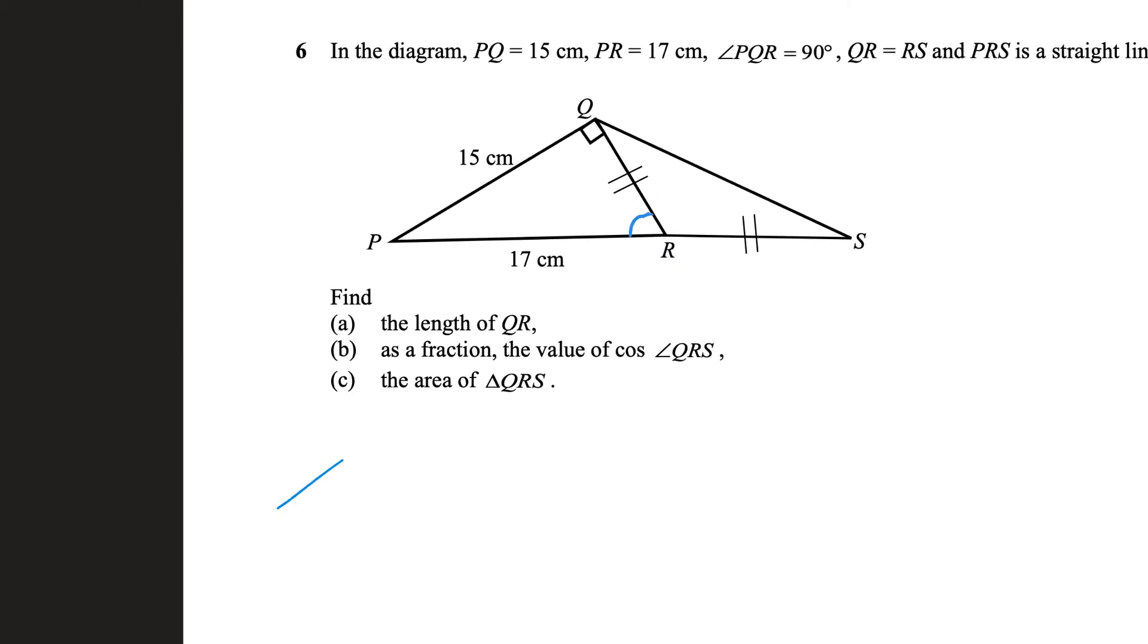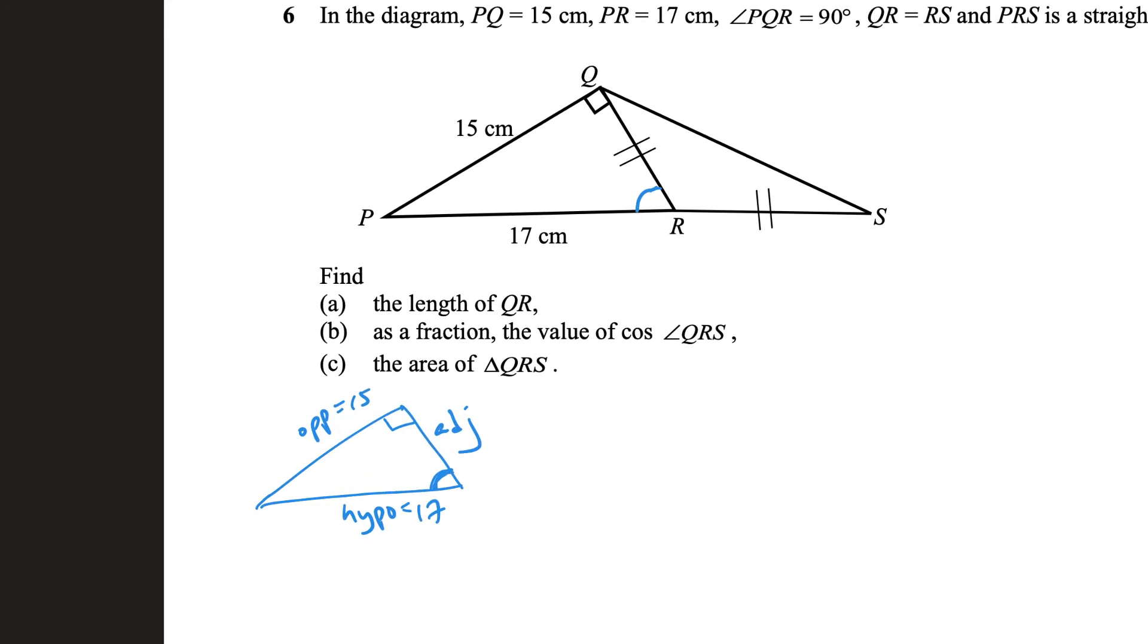Let me just draw it out so that it's clearer. This will be my adjacent, this would be my opposite, and this would be hypotenuse, if this is the angle that I'm talking about. And this is 15, and this is 17. That's useful, because I can say that opposite and hypotenuse, that would give me sine, so that's O, H, opposite and hypo.